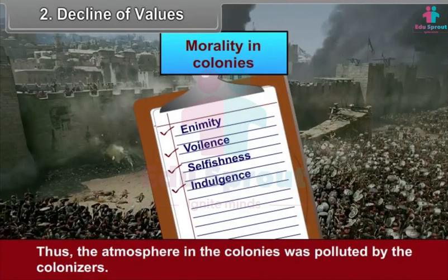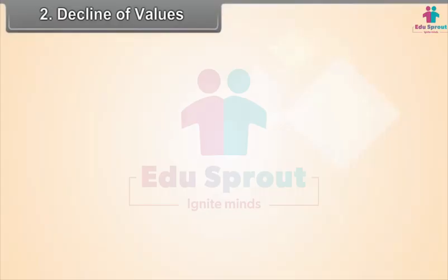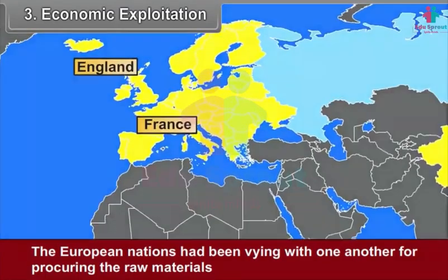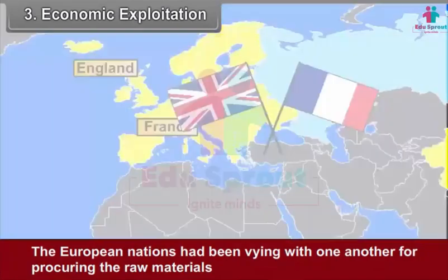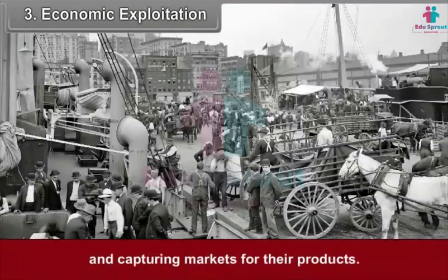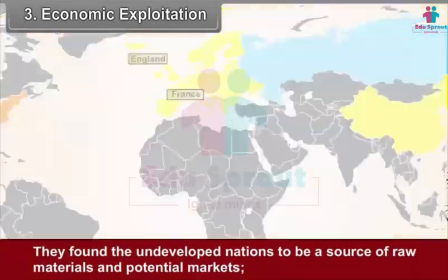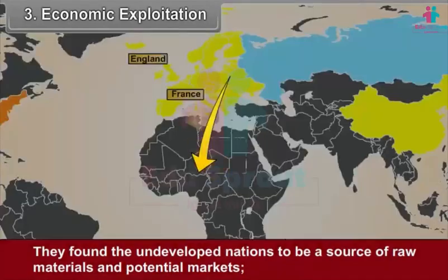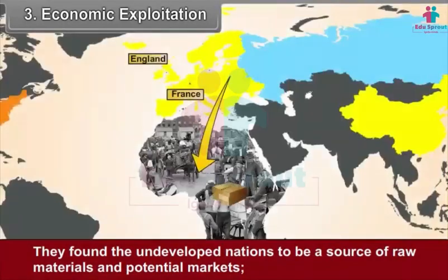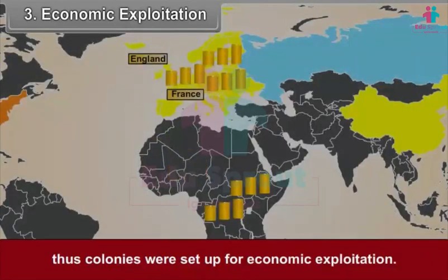Thus, the atmosphere in the colonies was polluted by the colonizers. Third, economic exploitation. The European nations had been vying with one another for procuring raw materials and capturing markets for their products. They found the undeveloped nations to be a source of raw materials and potential markets. Thus, colonies were set up for economic exploitation.